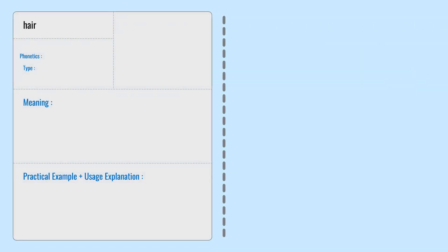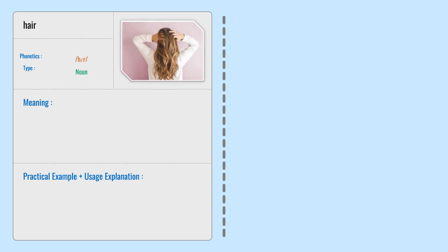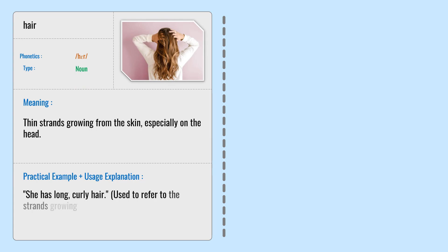Hair — thin strands growing from the skin, especially on the head. She has long, curly hair. Used to refer to the strands growing on a person's scalp or body.